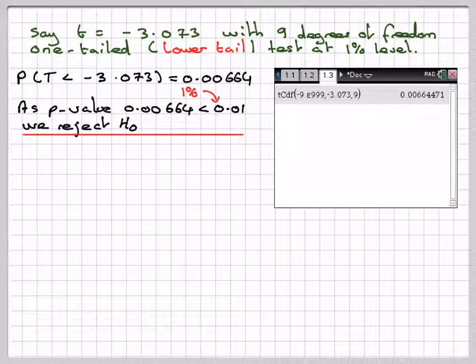This has been a video to show you how to calculate p-values given a value of t. The same process also works if you calculate a value of z when doing a z-test. Obviously, there will be no degrees of freedom.